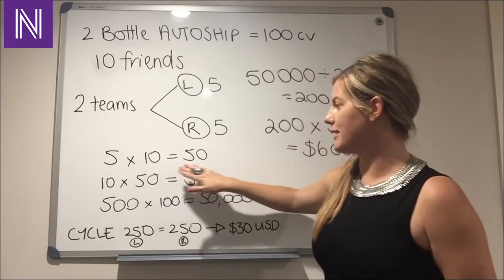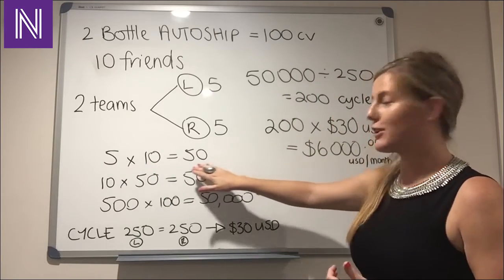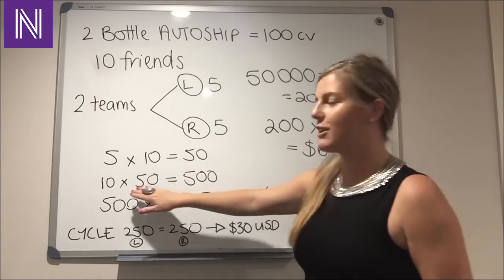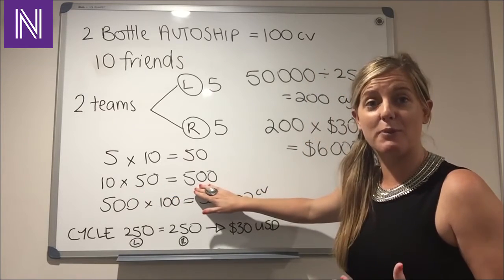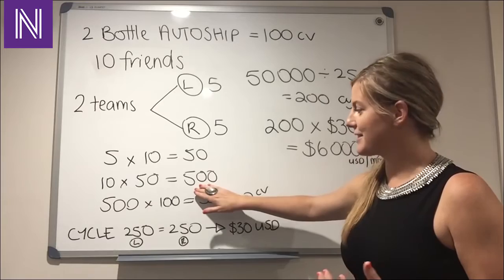Now we're going to help our five friends help 10 people with their skin. So now we have 50 people. We're going to help those 50 people all find 10 people. So we've now got 500 people that we're helping with their skin.